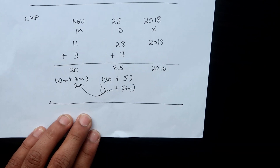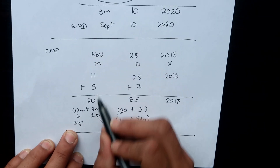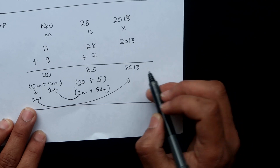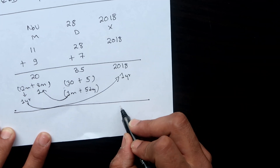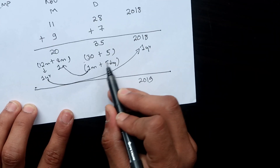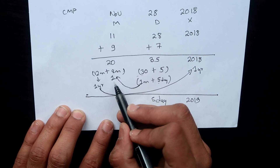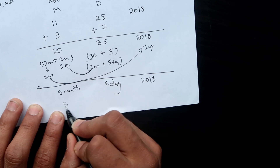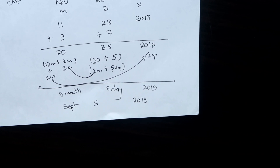Now the month column has 12 + 1 = 13 months — wait, let me recalculate: 8 remaining months plus 1 carry-over month = 9 months. But 12 months also means one year, so we carry one year to the year column. Year = 2018 + 1 = 2019. Day = 5, Month = 9 (September). The estimated date of delivery for November 28, 2018 is September 5, 2019.